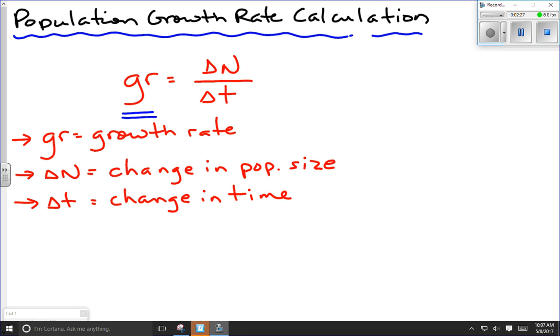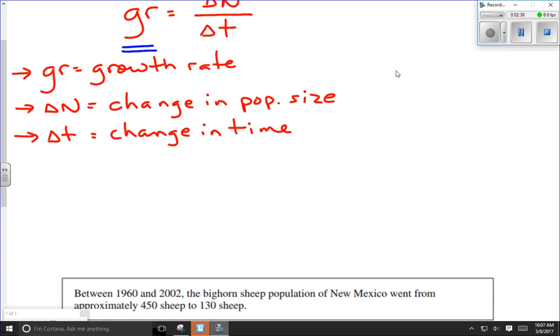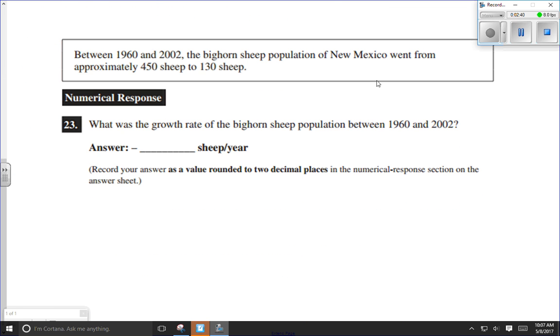The change in time is pretty straightforward. You'll be given a start time and an end time. Subtract the two and you'll get the change in time. So let's take a look at an example of this problem. It's a three-variable formula, so as long as you're given two of those variables, you can solve for the third.